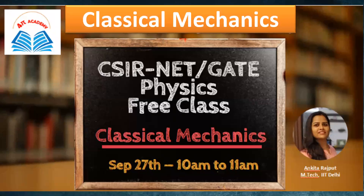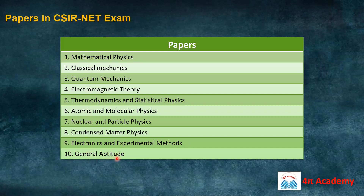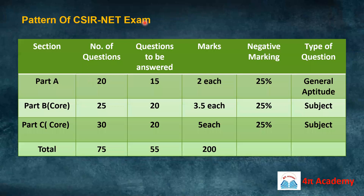Now we will start classical mechanics. In the CSIR NET examination, there are nine papers of physics plus a general aptitude section. The nine papers are: mathematical physics, classical mechanics, quantum mechanics, electromagnetic theory, thermodynamics and statistical physics, atomic and molecular physics, nuclear and particle physics, condensed matter physics, and electronics and experimental methods. You will get questions from all these papers in both NET and GATE examinations.